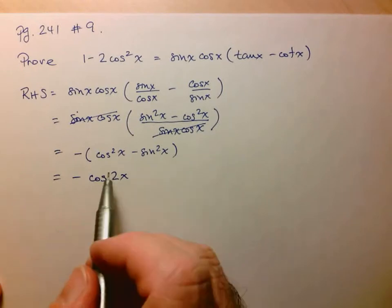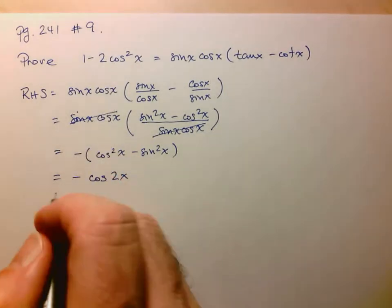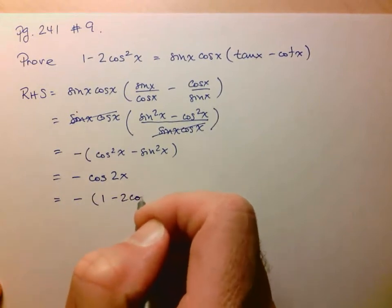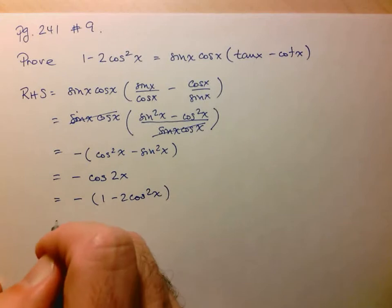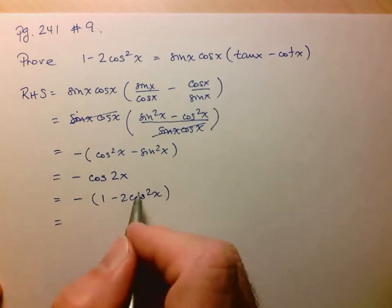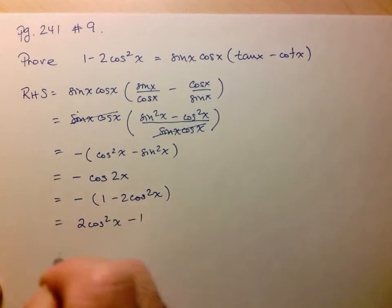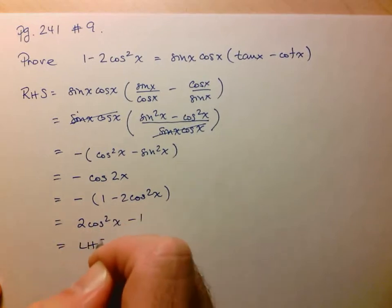And again, keeping an eye on what I have on the other side of the equation, I can now replace cos 2x by 1 minus 2 cos squared x. And then apply the negative to that, everything in the bracket. And I'm just left with 2 cos squared x minus 1, which is just equal to the left-hand side.